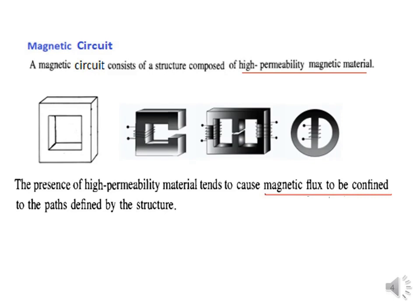The magnetic circuit consists of high permeability magnetic material. Any magnetic material which can facilitate easy flow of magnetic flux can form a magnetic circuit. The advantage of high permeability magnetic material is that it tends to confine the magnetic flux to the defined path — the flux lines remain within the core material and do not leak out. There could be various shapes of core material.